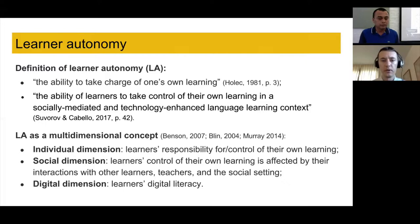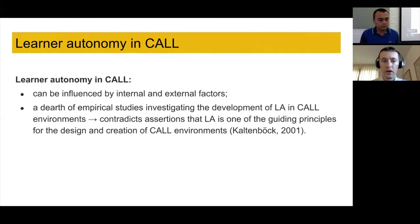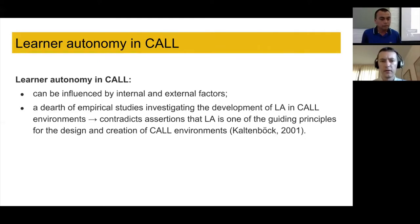The social dimension implies that learners' control of their learning does not happen in isolation — it is affected by interactions with other learners, the teacher, and the social setting. The digital dimension has to do with the learner's digital literacy. In CALL, learner autonomy can be influenced by both internal and external factors. We found that lots of publications in journals such as the Calico Journal state that learner autonomy is one of the guiding principles for design of CALL environments, yet we found very few studies that empirically investigate the development of learner autonomy in CALL environments.